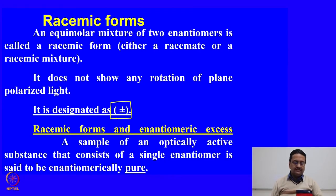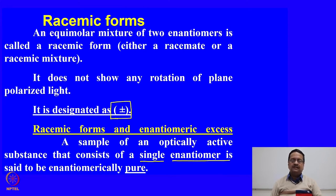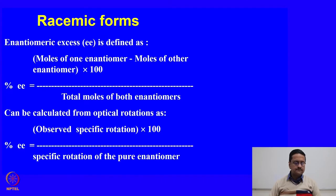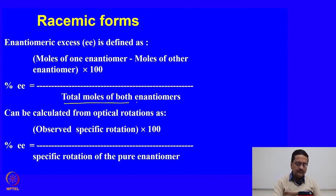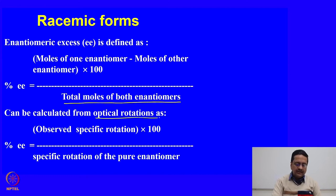Racemic forms and enantiomeric excess are important concepts to understand. A sample of an optically active substance that contains a single pure enantiomer is said to be enantiomerically pure, and the optical activity of that compound identifies the specific rotation of that substance. Enantiomeric excess is defined as the moles of one enantiomer minus moles of the other enantiomer multiplied by 100, divided by the total number of moles of both enantiomers present. This can be calculated from the optical rotation as: observed specific rotation divided by the specific rotation of the pure enantiomer, multiplied by 100.